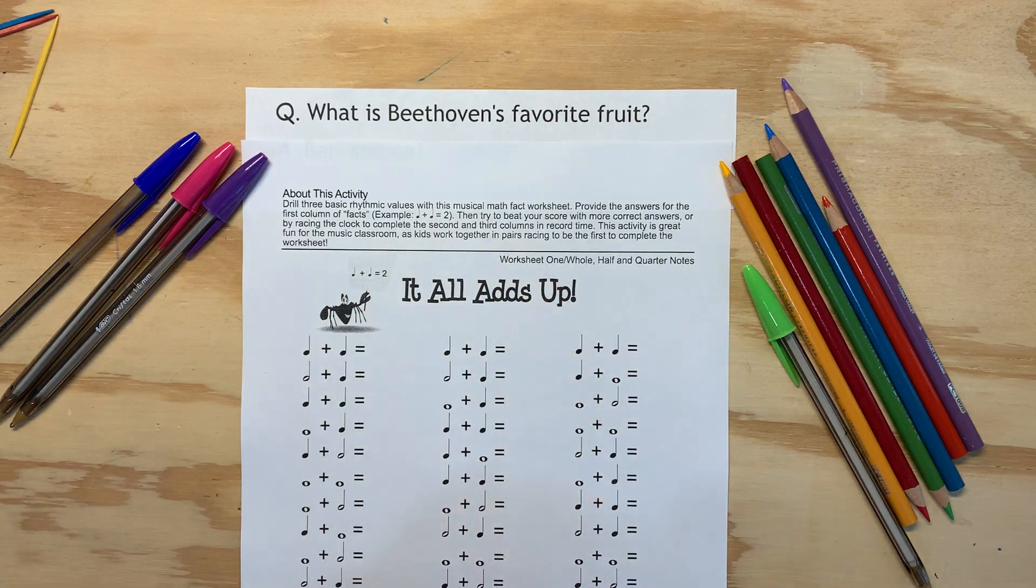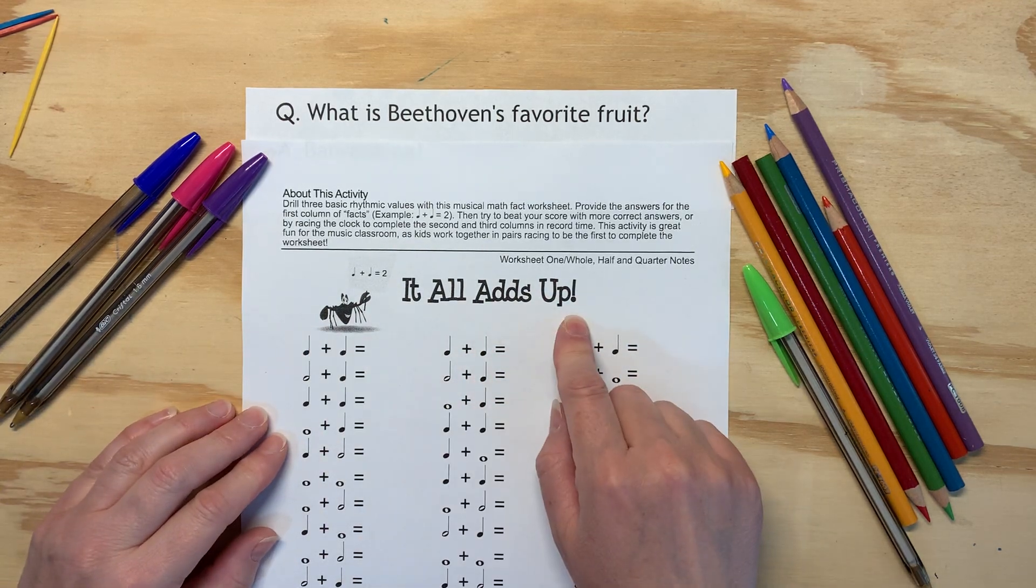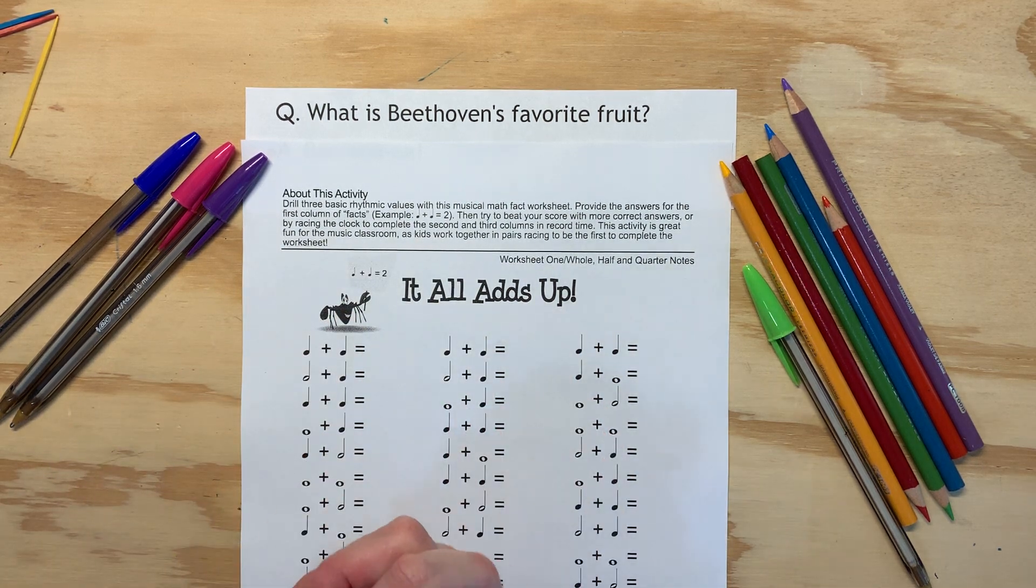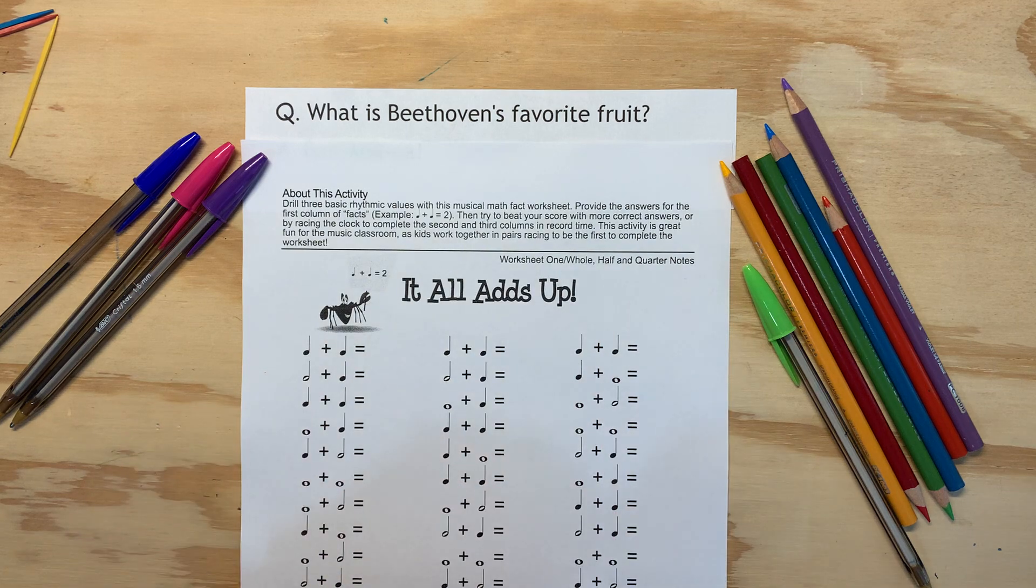All right, let's do some musical math. We can add up our whole note, half note, and quarter notes. If you don't know what those notes are, you can go back and watch the other video.